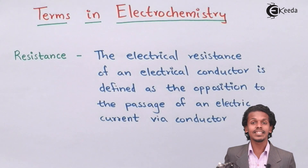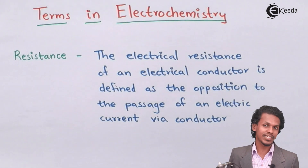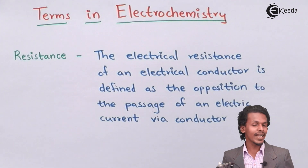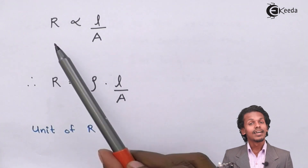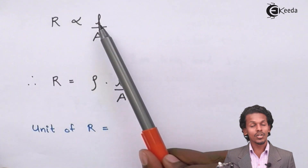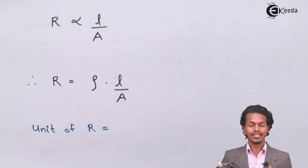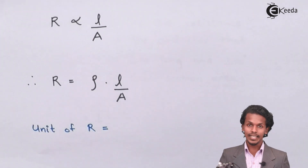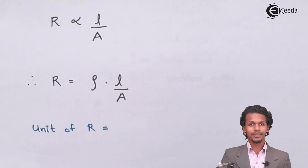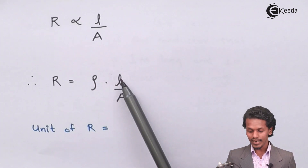If we have to increase the resistance, then we have to increase the length of the conductor and shorten the area of the cross section of the conductor through which the current is passing. For that, we have the formula: resistance R is directly proportional to the length L of the conductor, and inversely proportional to A, the area of cross section. This proportionality is equated as R equals rho times L upon A.